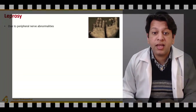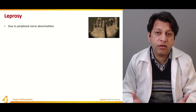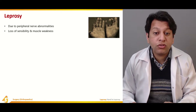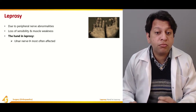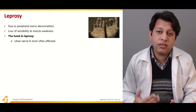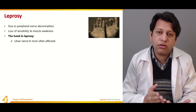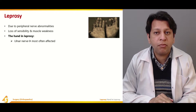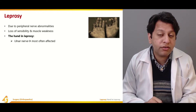In leprosy, hand deformities occur due to peripheral nerve abnormalities. The most commonly affected nerve is the ulnar nerve, which is mainly C8-T1. This results in loss of sensibility and muscle weakness over the ulnar one and a half digits — the ring and little fingers — as well as loss of sensation over the hypothenar eminence, leading to hypothenar atrophy.